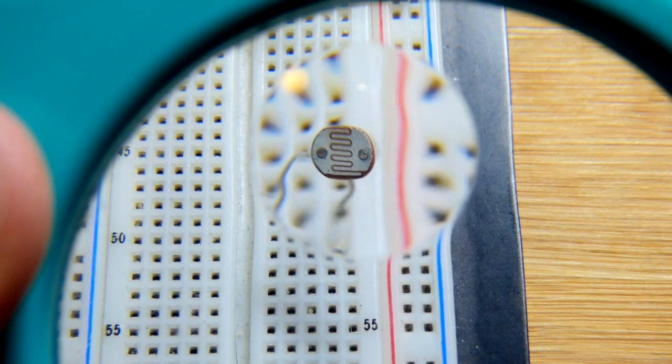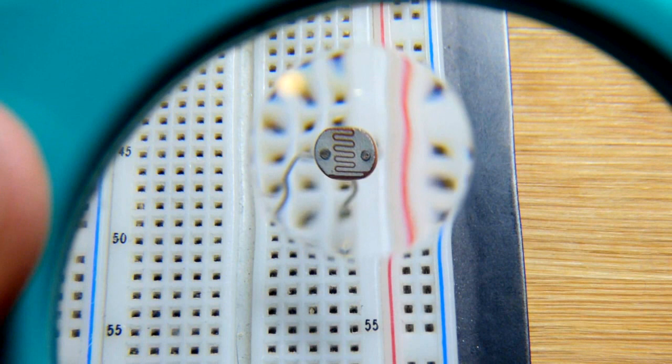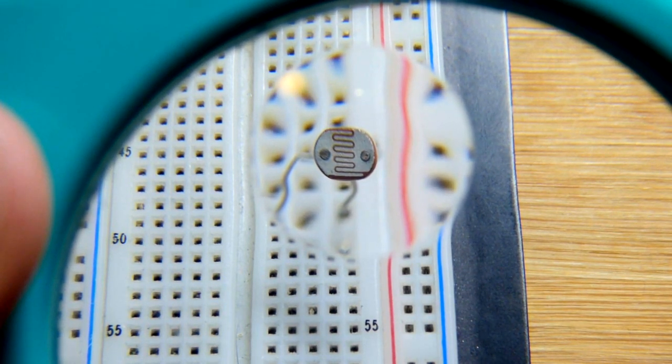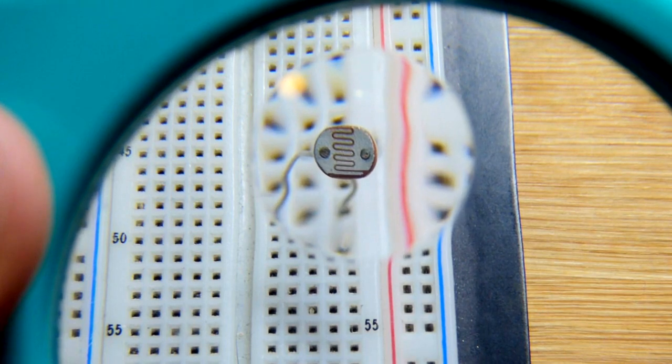So here's what all the light dependent resistors or photo resistors I have come across look like. They're white on top, a couple of dots where the leads come out the other end, and then a squiggle line going down the middle.